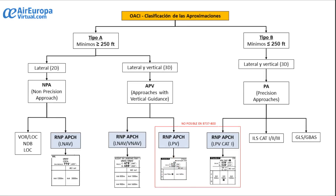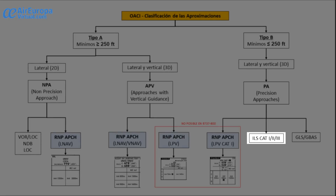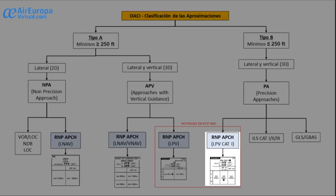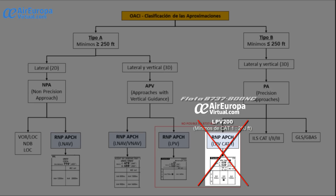Regarding precision approaches, besides the already known ILS CAT-1, CAT-2 and CAT-3, we also have an LPV approach considered a precision approach, called LPV CAT-1 or LPV 200, which nowadays equals the minimums for CAT-1. Once more, the Europa Virtual Fleet is not able to fly this type of approach.